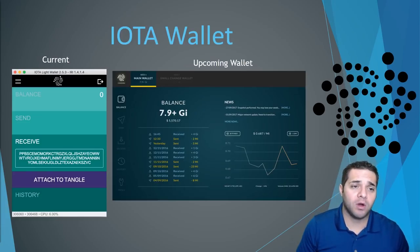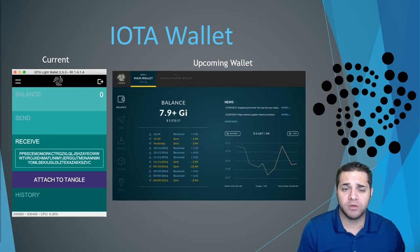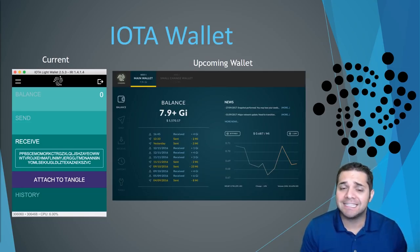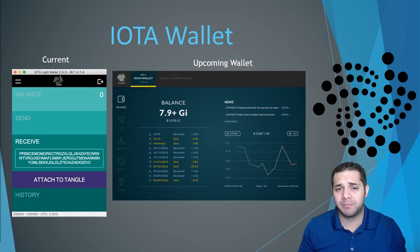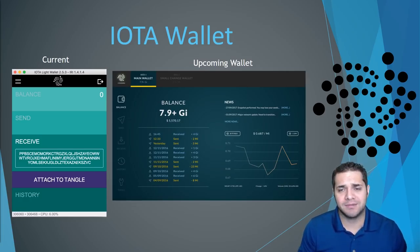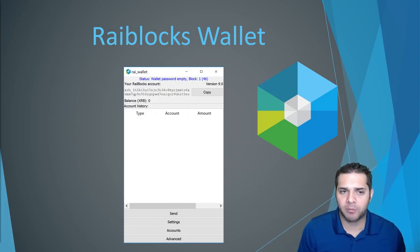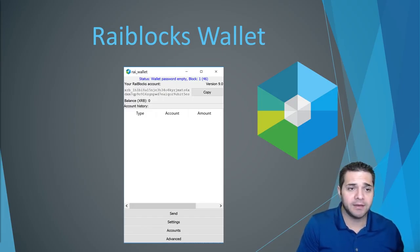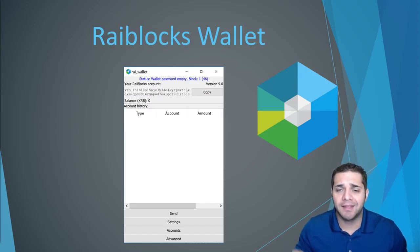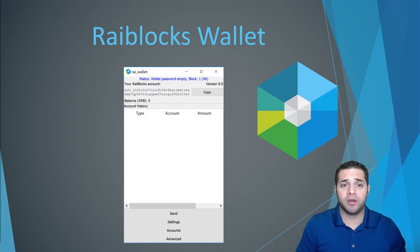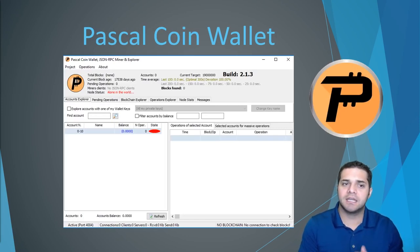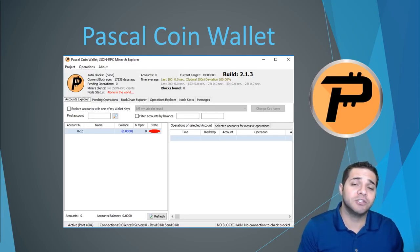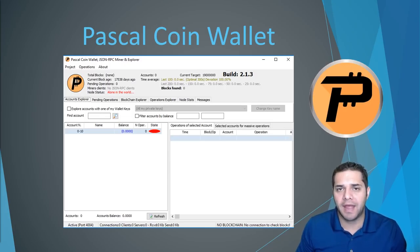The final segment: comparing all three wallets. IOTA currently has a Lite wallet, which is super basic, but their upcoming wallet is beautiful — easy to read, easy to navigate, and something you'd expect from such a large project. Next, RailBlocks: this is a developer wallet — black and white, bare bones interface, but it gets the job done. Hopefully they can follow IOTA's lead with a more user-friendly wallet. Last but not least, PascalCoin also has a developer wallet — black and white, not quite as bare-bones as RailBlocks, but it definitely could use work to be more user-friendly and visually appealing.